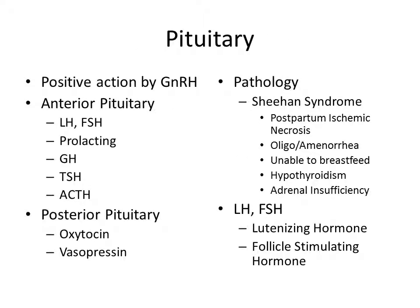The pituitary gland receives positive feedback from GnRH. The anterior pituitary hormones — FSH, LH, prolactin, growth hormone, TSH, and ACTH — and the posterior pituitary releases oxytocin and vasopressin.